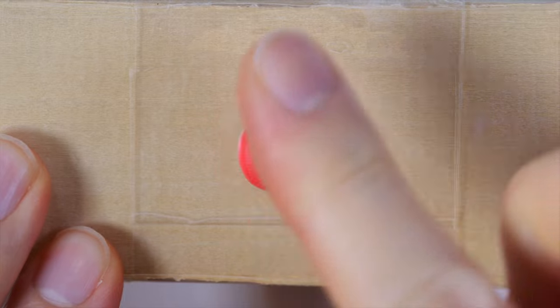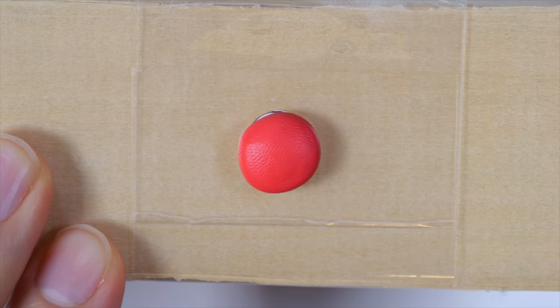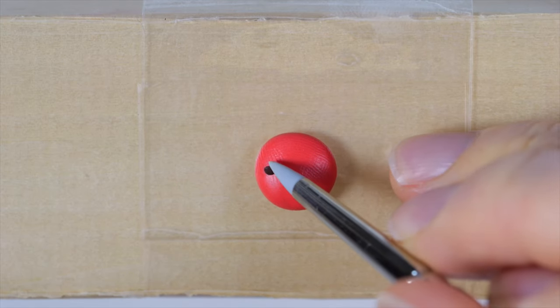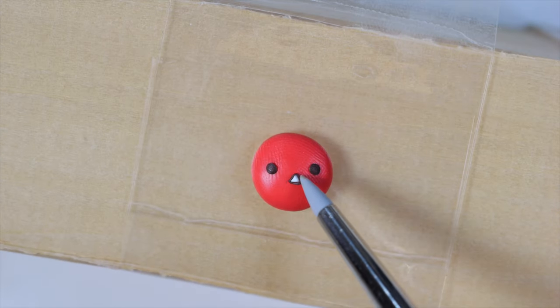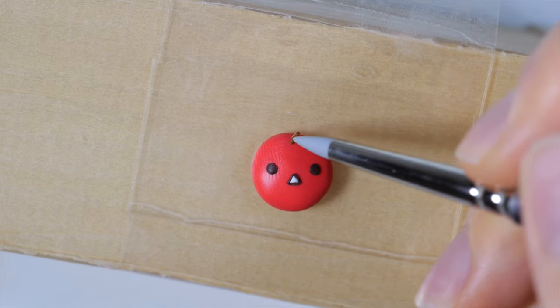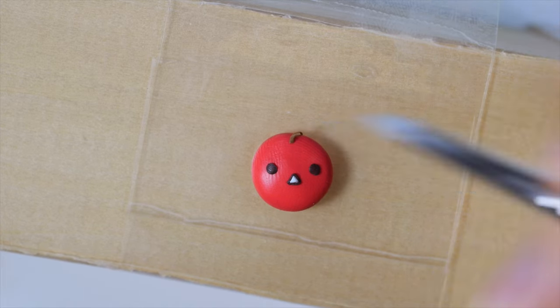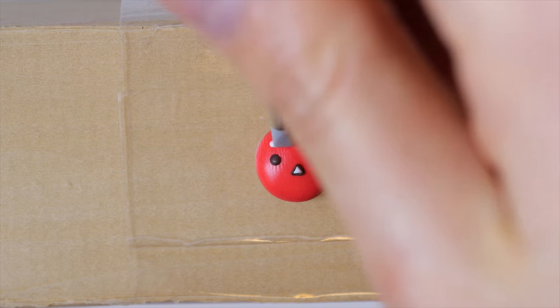So the next fruit is an apple. So we're going to take some red clay and flatten it out. Give it some dotted eyes. A triangle mouth. And a little stem on top. And some shine marks.